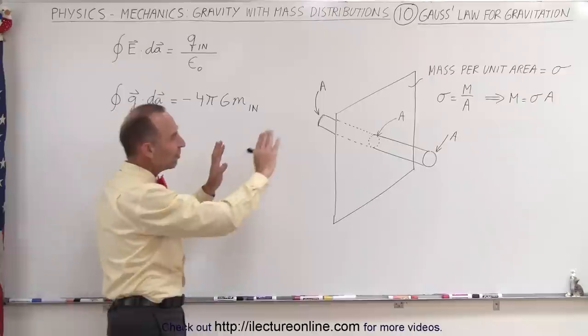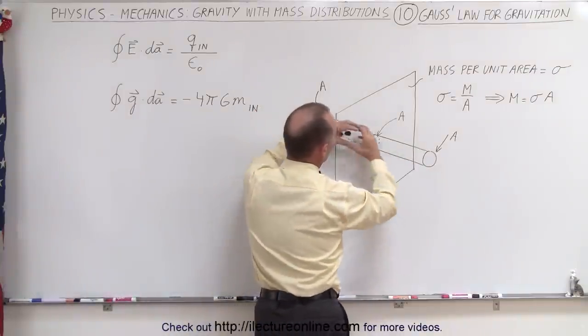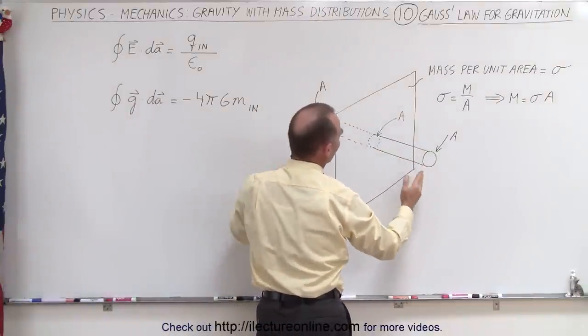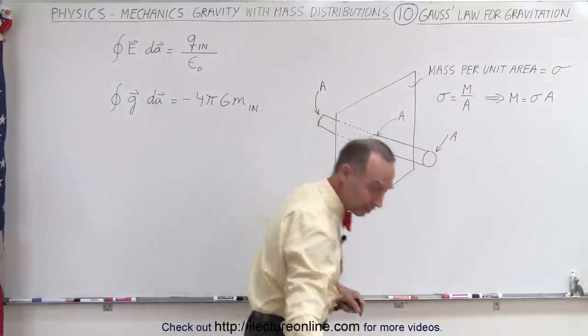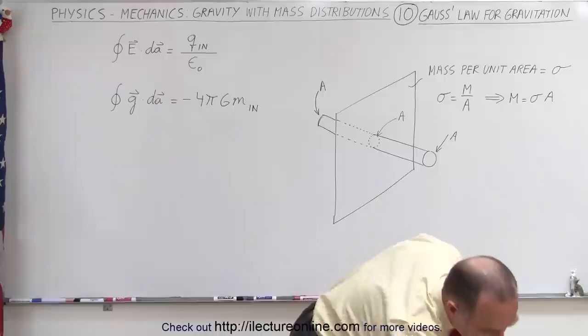So if I have an infinite sheet here, notice that if we cut a Gaussian surface through it, which is the shape of a cylinder, we can see that the gravitational field will be directed outward.